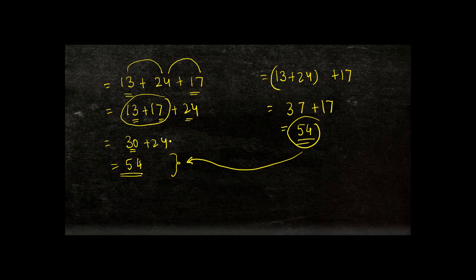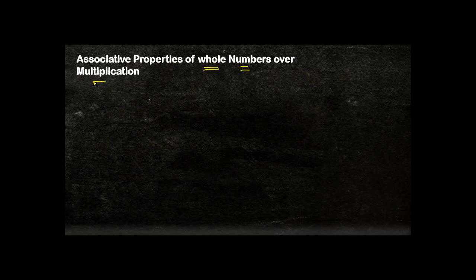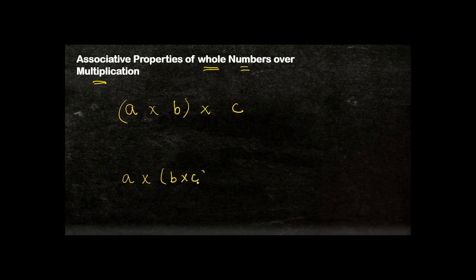Now let's see whether this same property applies to whole numbers in the case of multiplication. For any three numbers A, B, and C, does it matter if I multiply A times B first and then multiply the product by C, or if I multiply B times C first and then multiply A by that product?